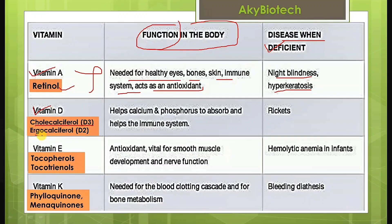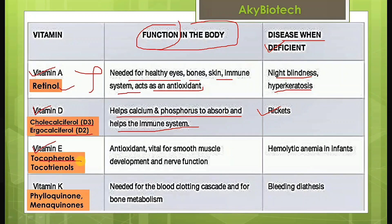Vitamin D — another name for it is cholecalciferol (D3) and ergocalciferol (D2). Its function is that it helps calcium and phosphorus to be absorbed and helps the immune system. Deficiency of vitamin D leads to a disease known as rickets.